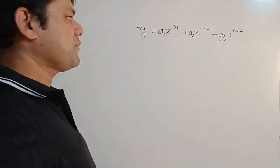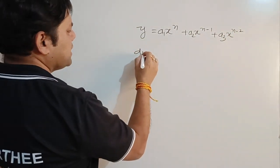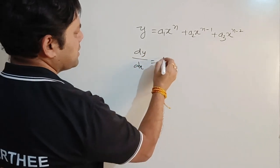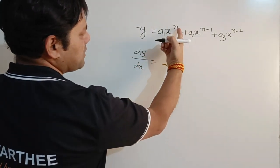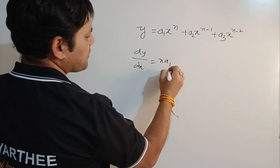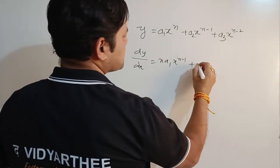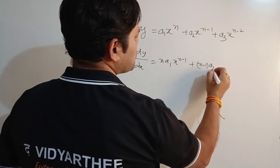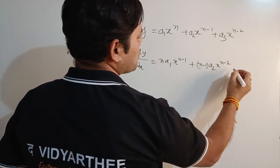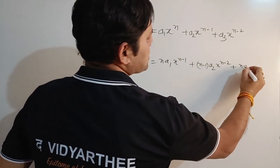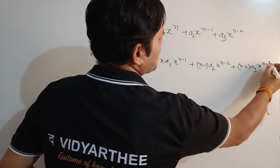If the question is of this order, then dy/dx will be n times a1 x to the power n minus 1. This will become n minus 1 times a2 x to the power n minus 2, plus n minus 2 times a3 x to the power n minus 3.